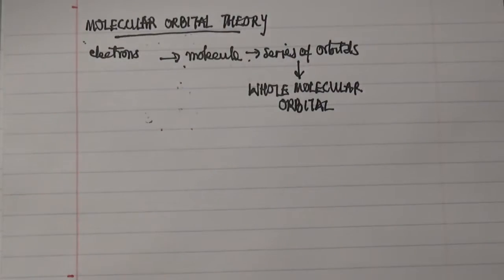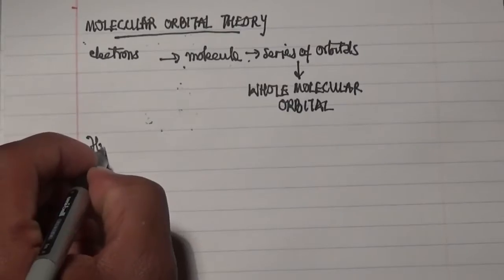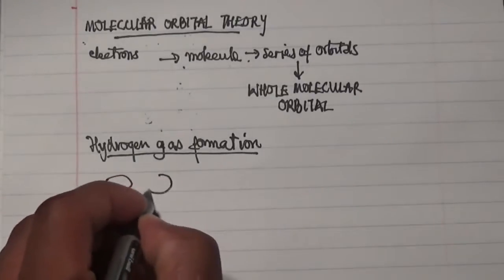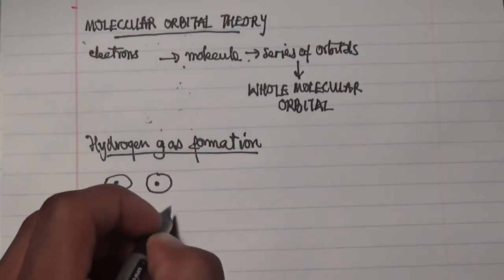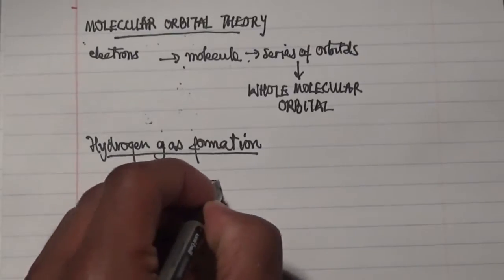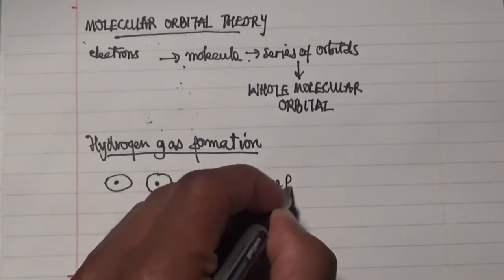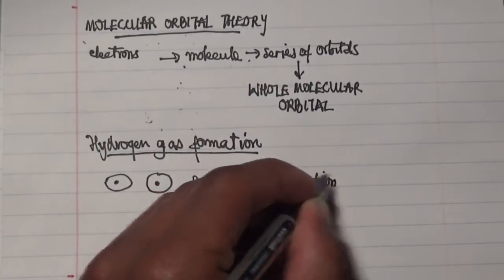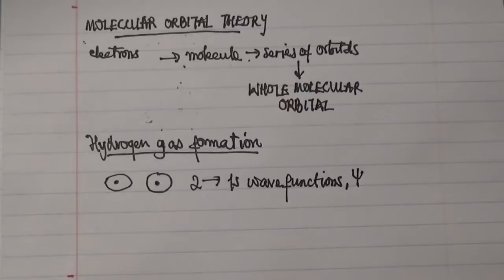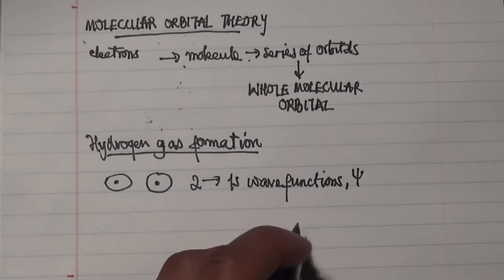Looking at the formation of hydrogen gas, as both atoms come in contact, what happens is that there's a combination of the two 1s orbitals, or wave functions, which is expressed as this particular symbol here. This combination of these two 1s orbital wave functions results in either a constructive formation or a destructive process.